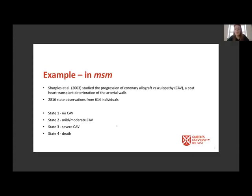Chris Jackson looked at coronary allograft vasculopathy (CAV) — post heart transplant deterioration of the arterial walls. They have panel data from 614 individuals with repeated measures roughly each year. There are four health states in this model: state one is no CAV, progressing to mild or moderate CAV, severe CAV, or death.